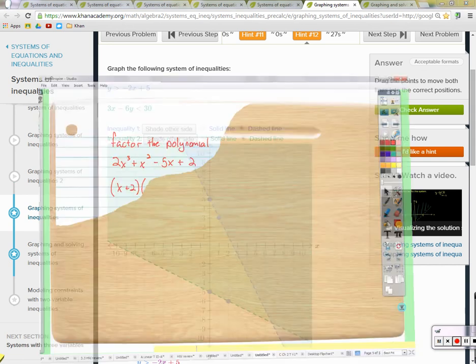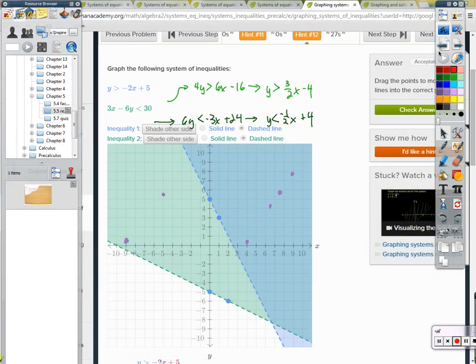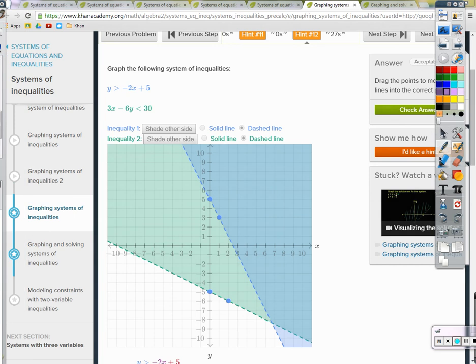Yeah, let me over here. I can use a pen. This one, we'll just go ahead and get it in slope intercept form. Negative 6y is less than negative 3x plus 30. Divide by negative 6 on both sides. What happens when you divide by negative 6? Just flip it around.